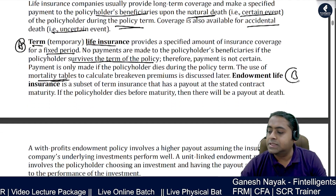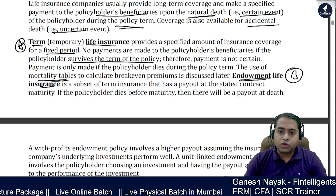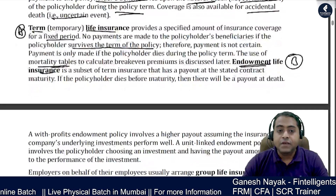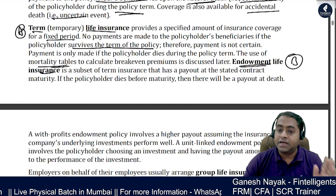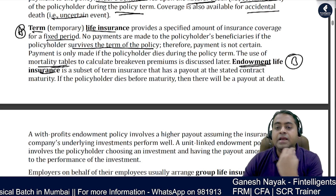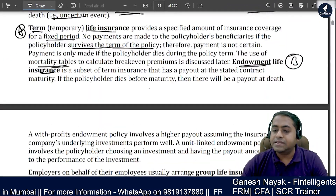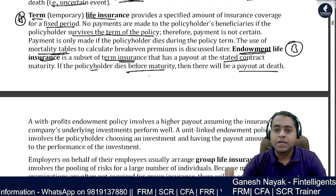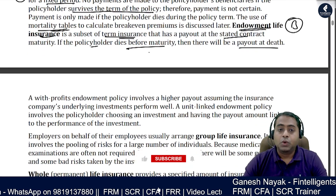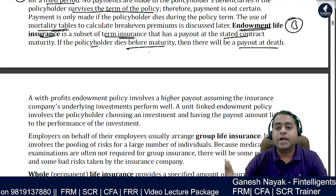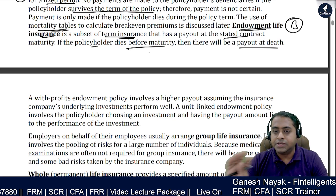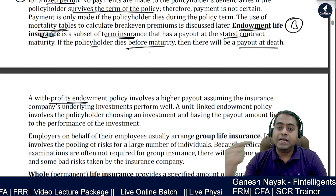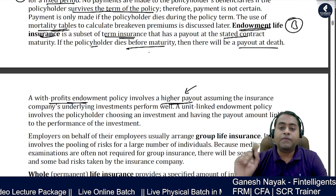The second variation is the endowment fund. In an endowment product, if the customer dies within the term, he gets the sum assured. If he survives, he also gets a sum assured — meaning his invested money is returned with a slight return. There is also a 'with profit' variation where, if the insurance company is doing well, the payout is slightly higher — the policyholder participates in the company's growth. That is why it is called a with-profit endowment fund.